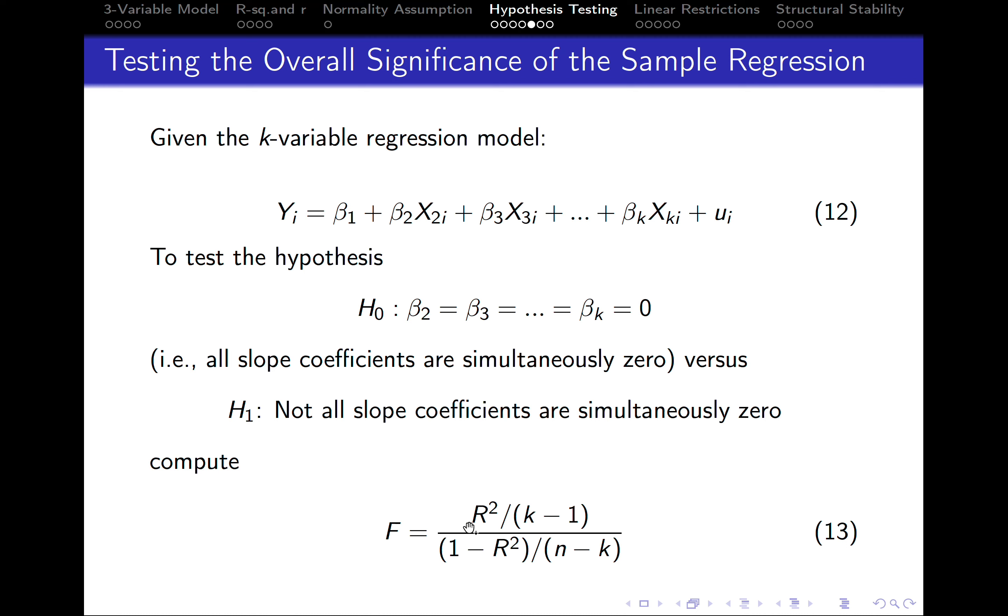And we divide everything by the difference between 1 minus r squared, so minus coefficient of determination over n minus k, the number of observations minus number of parameters.